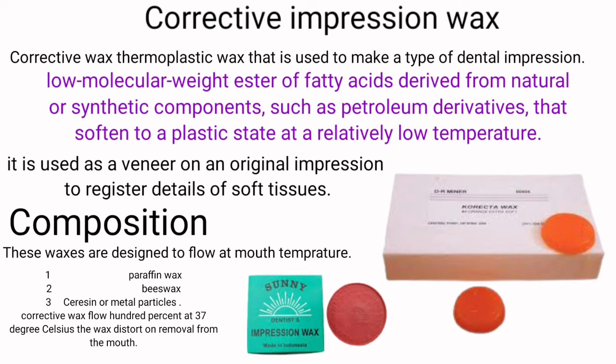Different waxes are mixed in the composition of corrective impression wax. These waxes are designed to flow at mouth temperature. The components are: number one, paraffin wax; number two, beeswax; and number three, serazin or metal particles. Corrective wax flows 100% at 37 degrees Celsius, and the wax distorts on removal from the mouth.